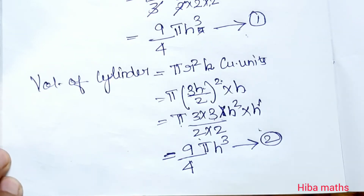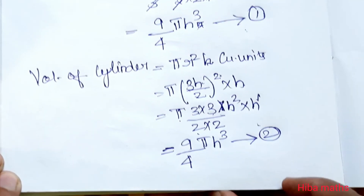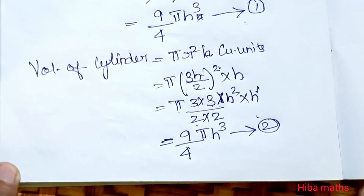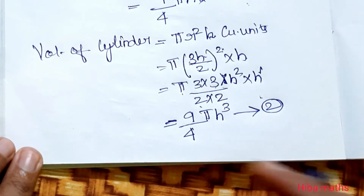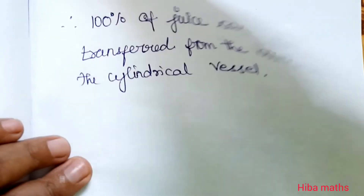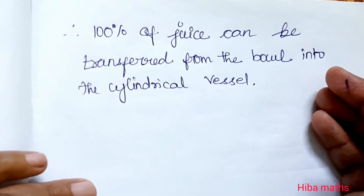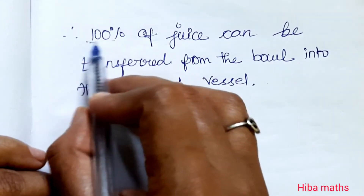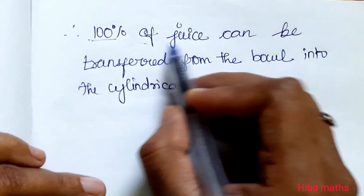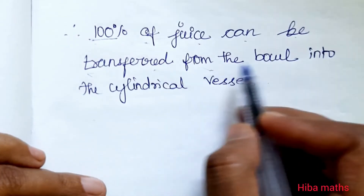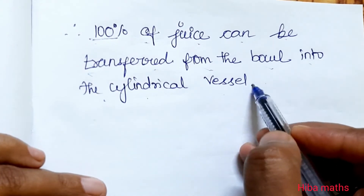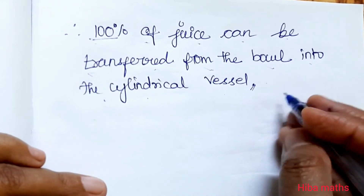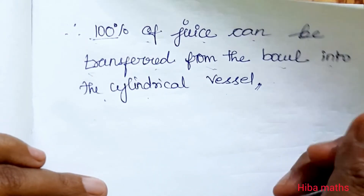So the first result equals the second result. The volume of the hemispherical bowl equals the volume of the cylindrical vessel. Since the bowl is full of juice and we transfer it into the cylindrical vessel, the percentage of juice that can be transferred from the bowl into the cylindrical vessel is 100%.